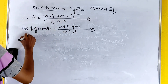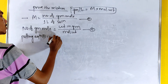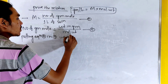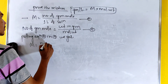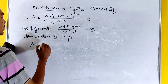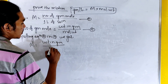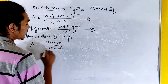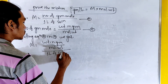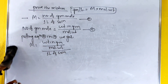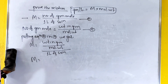Putting equation 2 into equation 1, we get molarity equals the number of moles, which is weight in gram divided by molecular weight, all divided by 1 liter of solution. So M equals molarity.